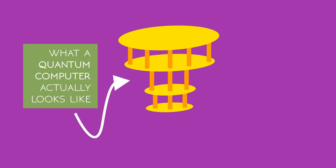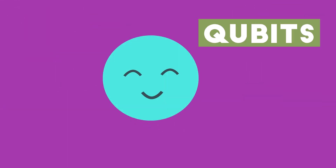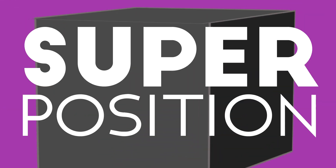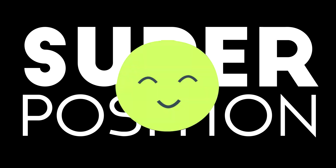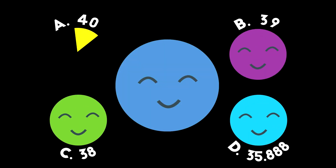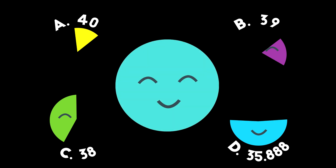A quantum computer, on the other hand, contains quantum bits or qubits. These are isolated particles in a state of superposition — a fancy way of saying that 15% of it thinks the answer is 40, 20% thinks it's 39, and so it goes.